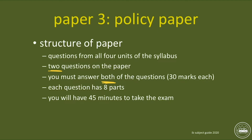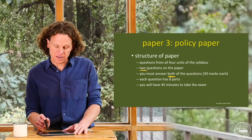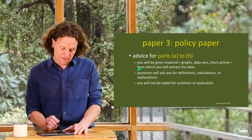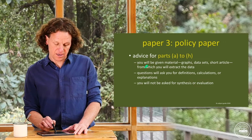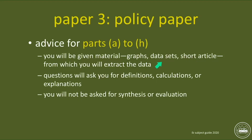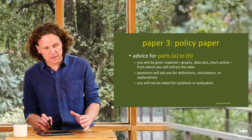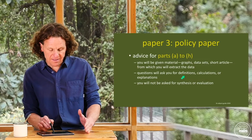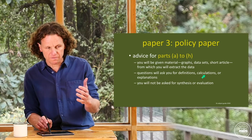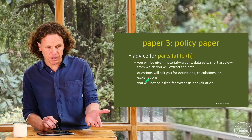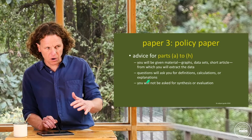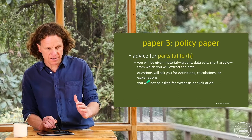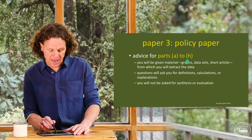Each question has eight parts. You will have 45 minutes to take this paper. Parts A through H: you will be given material — graphs, data sets, a short article — from which you extract the data to provide definitions, provide calculations, or provide explanations. You will not be asked for synthesis or evaluation. You need to either define a term, calculate some sort of unemployment rate or inflation rate, or provide explanations using definitions of what that means. It's like a watered-down version of analysis — you just give them what they want.